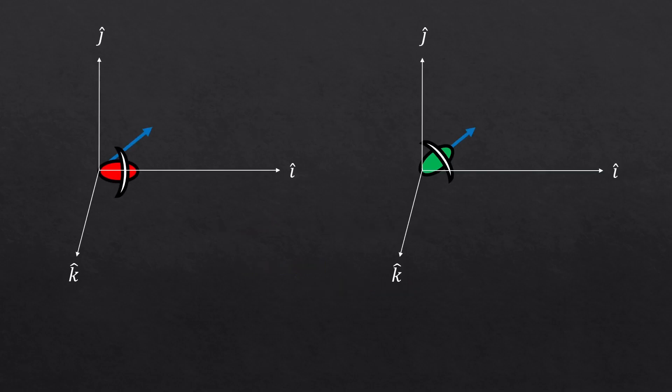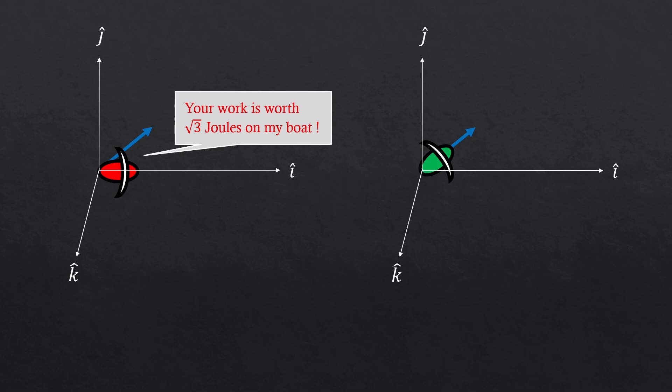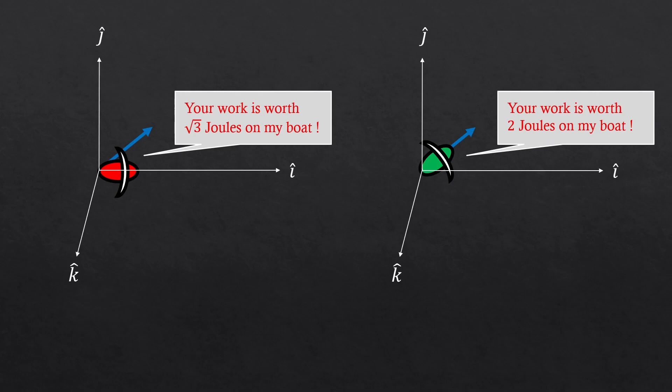So back to the sailboats. We just had the red and the green boats traveling the same distance on the same background, but they still gained different amount of energies. Why was that? That's of course because one was not aligned with the background, but the other one was. So the wind was valued differently in the two boats.